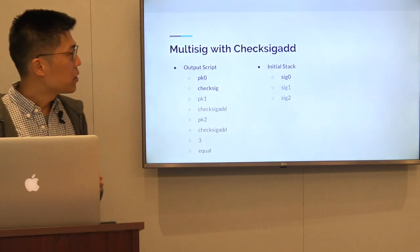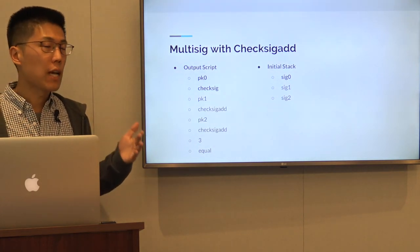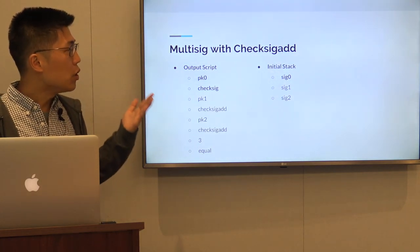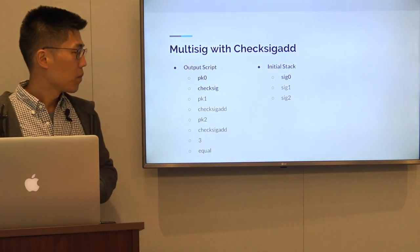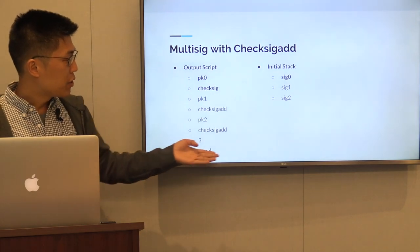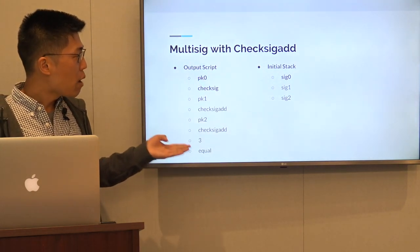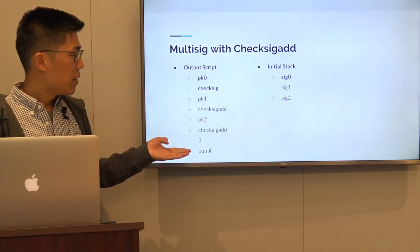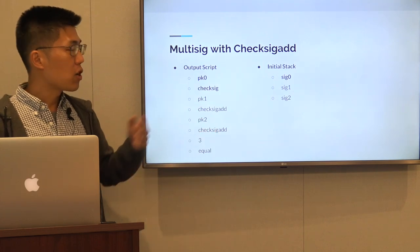I'd like to spend a couple of minutes explaining how one can construct a multisig output with the new opcode check sig add. As you can see on the left, we have an output script that uses check sig add and check sig opcodes to express a k-of-n multisig output.